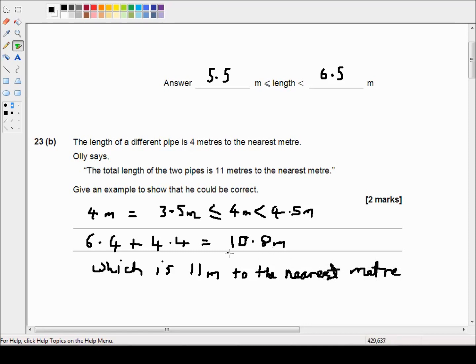You could have actually had 6.3 and 4.3 which would have added up to 10.6 which would have still rounded up to 11, or even 6.3 and 4.2 which would have been 10.5 which would have rounded up to 11 but that's as low as you can get that would round up to 11.